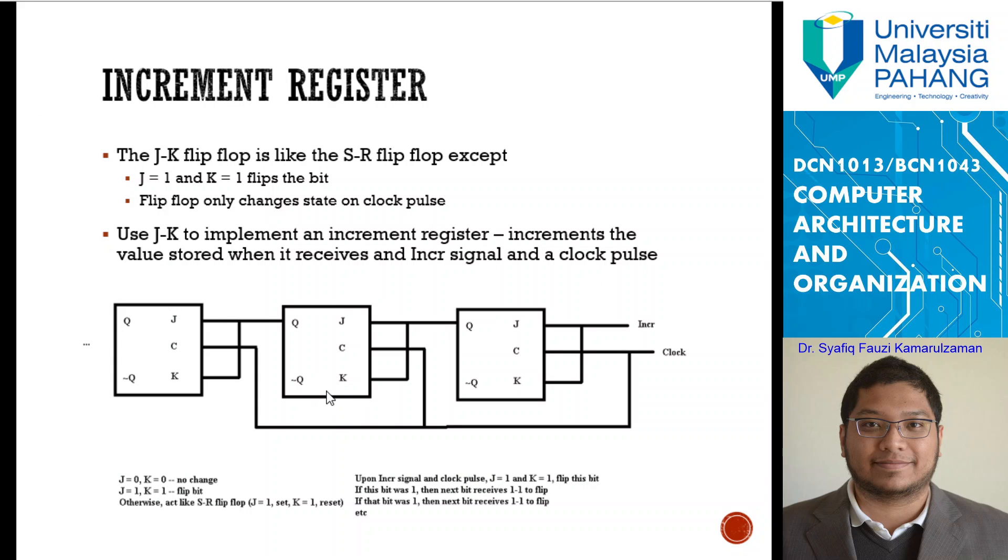We have another increment register. Increment register is where you have 0-0-0-0 go to 0-0-0-1, and then 0-0-1-0. It increases the value by 1. JK flip-flop is like the SR flip-flop except J equals 1 and K equals 1 flips the bit. We use JK to implement an increment register that increments the value stored when it receives the increment signal and a clock pass. If you do programming in C++, you have X++. They will increment according to the signal when the clock comes in.